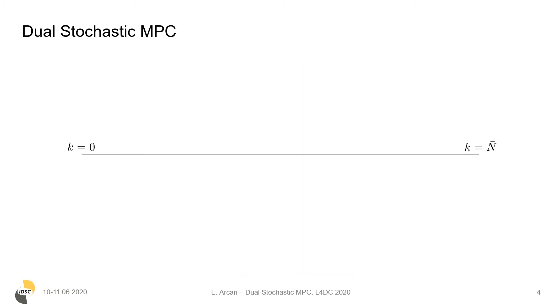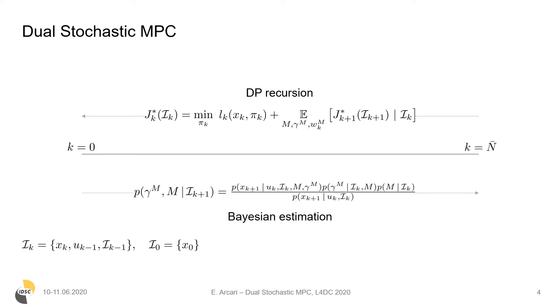The dynamic programming recursion is based on solving the Bellman equation for each time step, given the current information I-k that collects all the states and inputs seen up to time k, while updating the distribution of the modes and of the parameters.